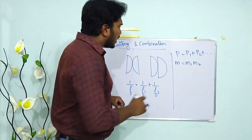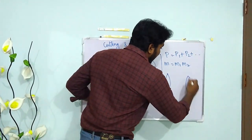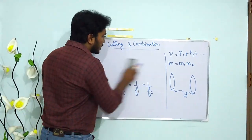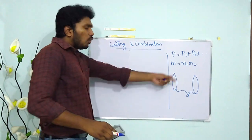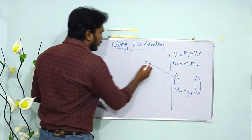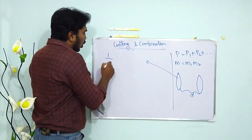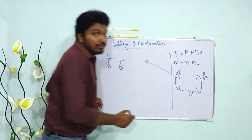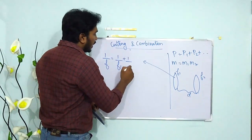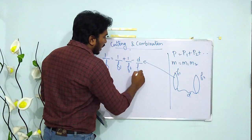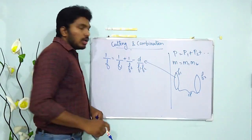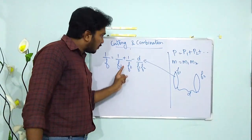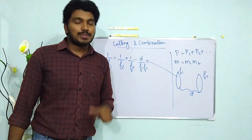When two lenses are separated by a distance D, the effective focal length is given by: 1/F = 1/F1 + 1/F2 − D/(F1 × F2).